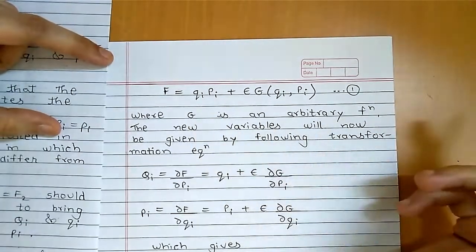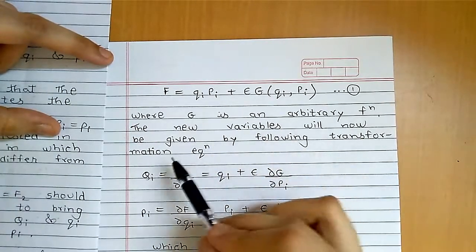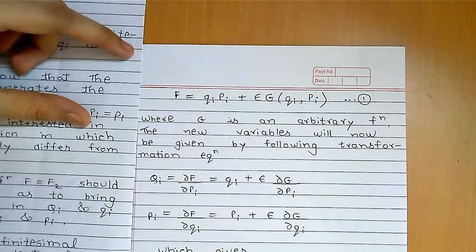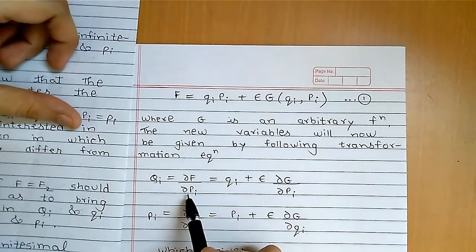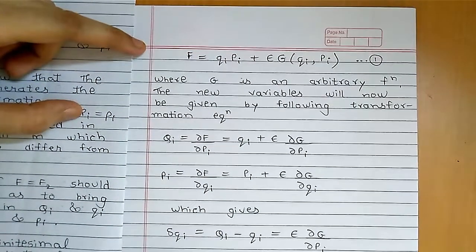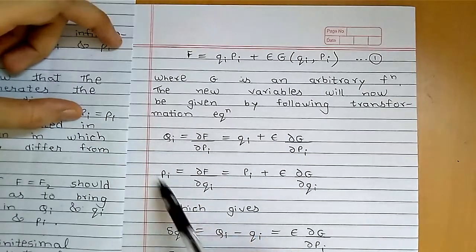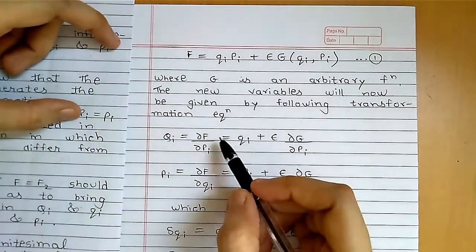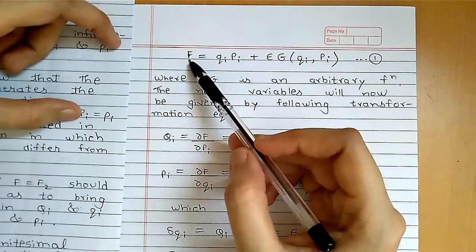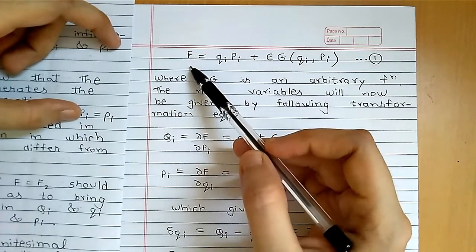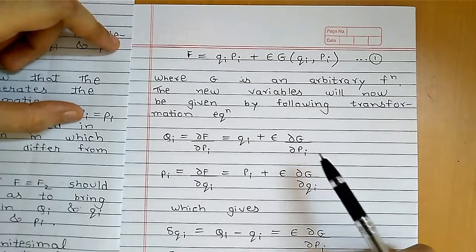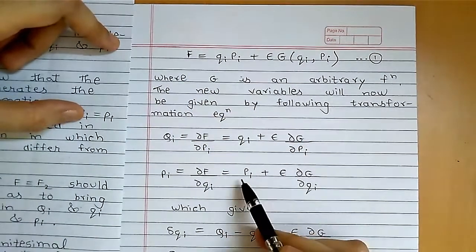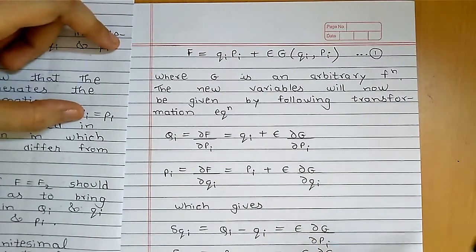The new variables will now be given by the transformation equations of the F2-type generating function: capital Q_i equals del F upon del capital P_i, and small p_i equals del F upon del q_i. Differentiating our modified F partially with respect to capital P_i gives: Q_i equals q_i plus epsilon times del G upon del capital P_i. Differentiating partially with respect to small q_i gives: p_i equals capital P_i plus epsilon times del G upon del q_i.